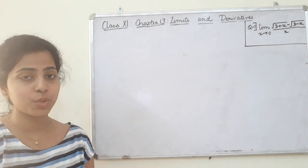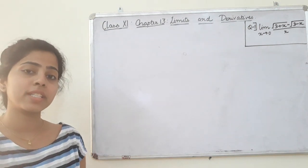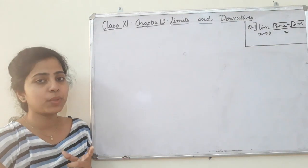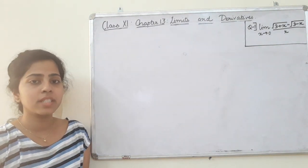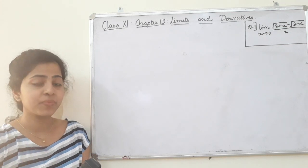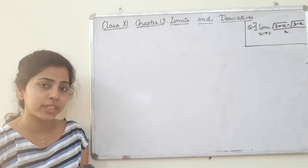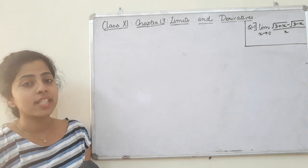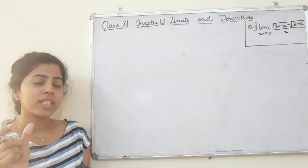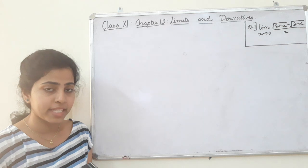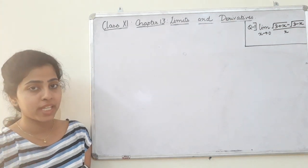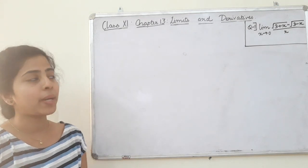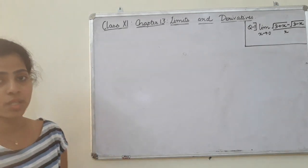Let's learn the direct substitution method. We are also learning the factorization method. If the denominator is 0 using direct substitution, then we use the factorization method — we can cancel the denominator.